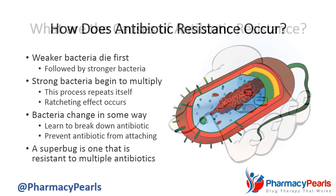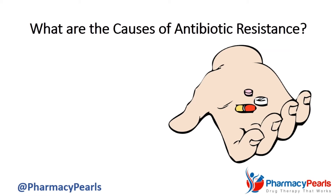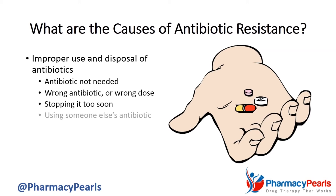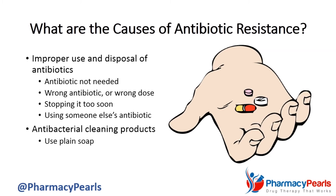Many things contribute to antibiotic resistance. Perhaps the biggest contributing factor is the improper use and disposal of antibiotics. For instance, taking an antibiotic when it is not needed, such as in the case of a viral or fungal infection, treating a bacterial infection with the wrong antibiotic or at the wrong dose, stopping an antibiotic too soon, or using an antibiotic that was prescribed for someone else. Additionally, antibacterial cleaning products used in the home can also lead to antibiotic resistance. Use plain soap instead, as it has been shown to be just as good at killing bacteria and is much safer in this regard.